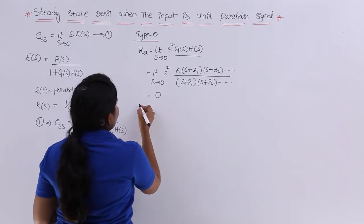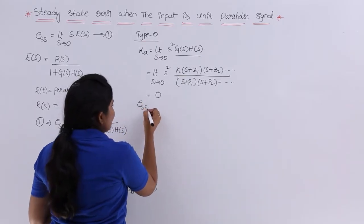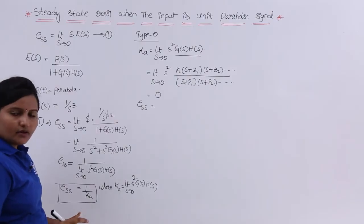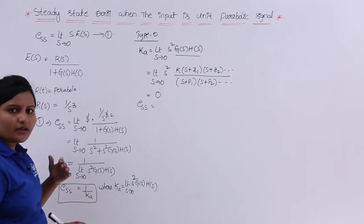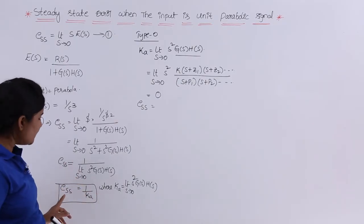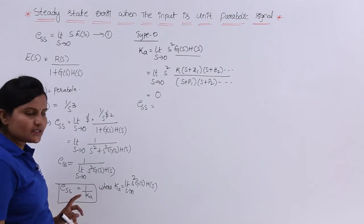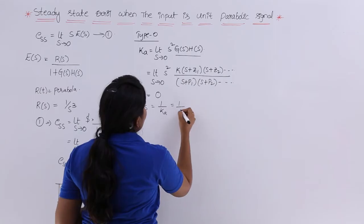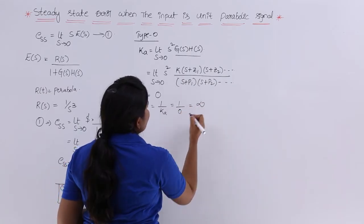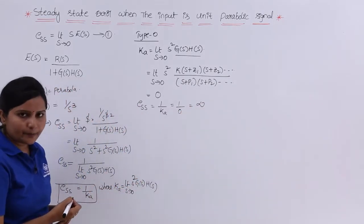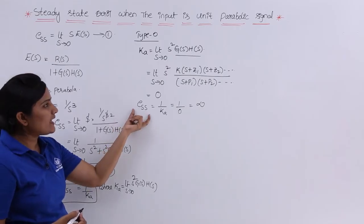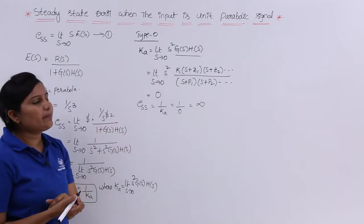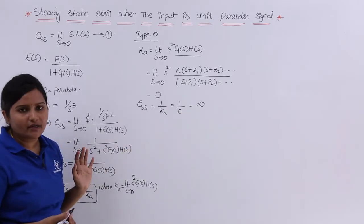For unit parabolic signal input, the equation to calculate ESS is 1/Ka. For a type 0 system, Ka = 0, so ESS = 1/0 = infinity. Therefore, the steady state error for a type 0 system when the input is unit parabola is infinity.